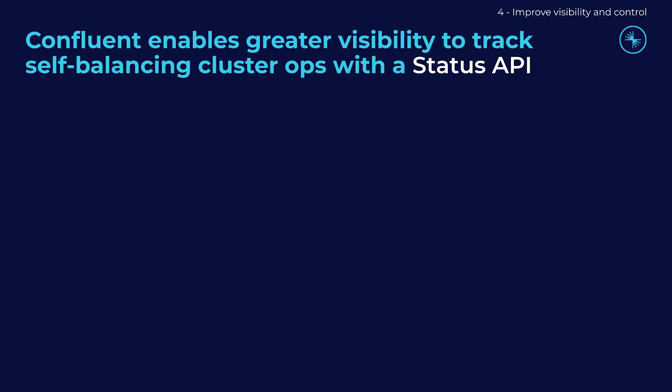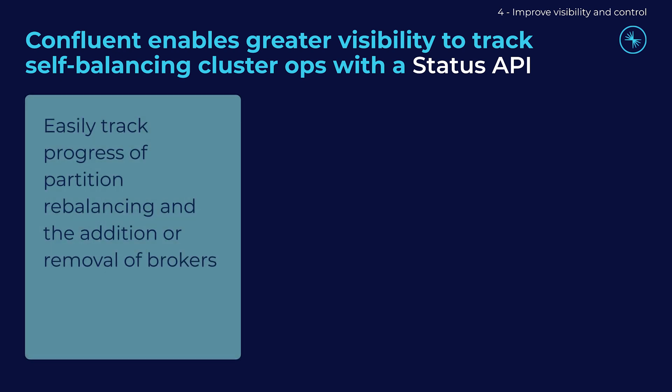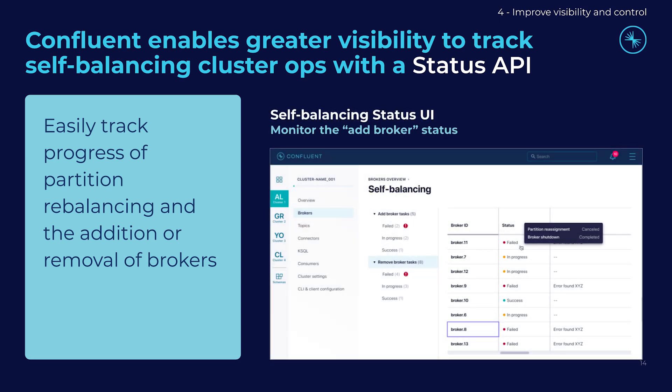We've also added self-balancing cluster operations to the status API. You can now create queries that return results related to self-balancing operations — partitions moving around, brokers being created and destroyed. These cluster events during self-balancing have all now come into the status API. That's an important thing you will need to monitor if it's happening, and you can now monitor it through the status API. If monitoring is a concern of yours, check out the docs as soon as you can — you really want to know about that feature.